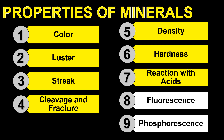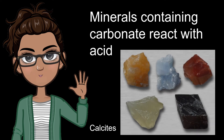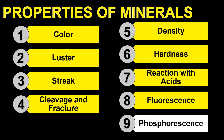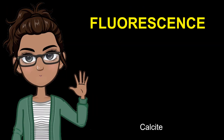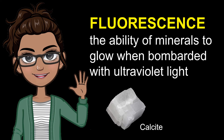The seventh property of mineral is the reaction with acids. Minerals that contain carbonate react with acid. For example, a sample of calcite reacts with dilute hydrochloric acid or HCl. Moving on, we have the eighth property of mineral: fluorescence. The ability of minerals to glow when bombarded with ultraviolet light is called fluorescence. In this condition, minerals may not glow under ordinary light, because such minerals are selective of the wavelength of light that causes them to glow. Calcite possesses this property.